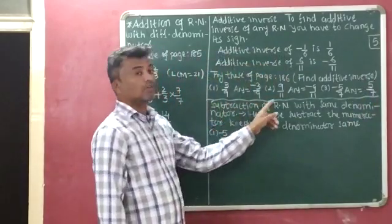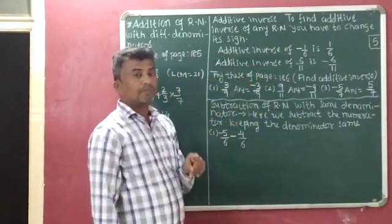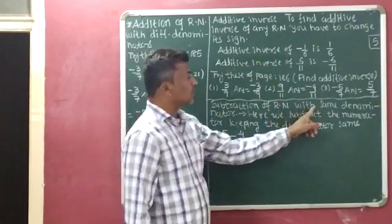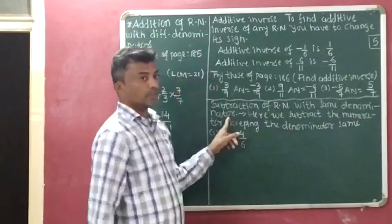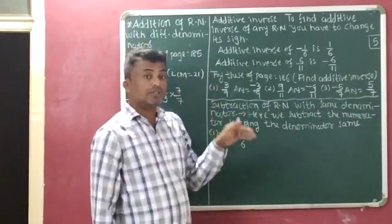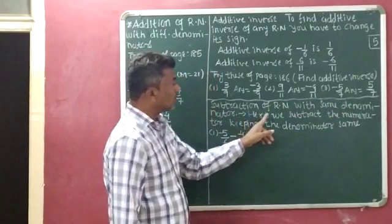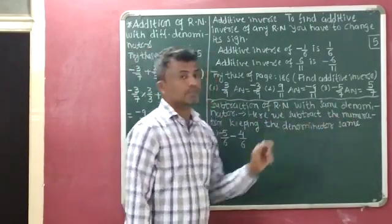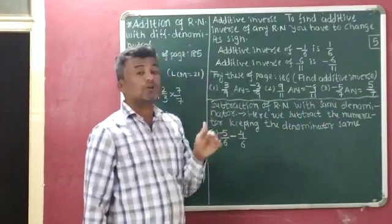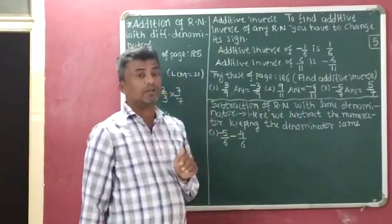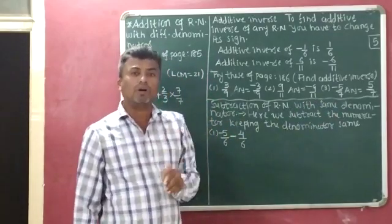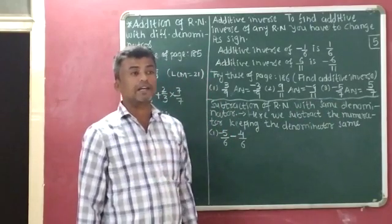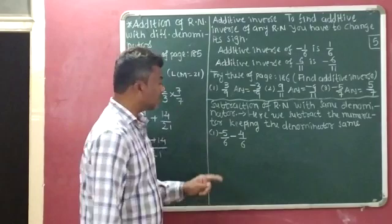Now we will discuss subtraction of rational numbers with same denominators. In this case, we subtract the numerators while keeping the denominator the same. I will explain this with the help of an example.